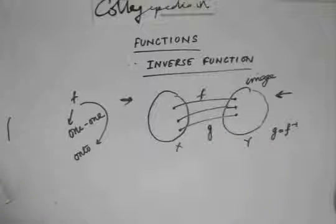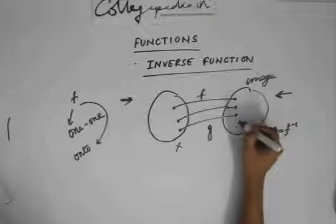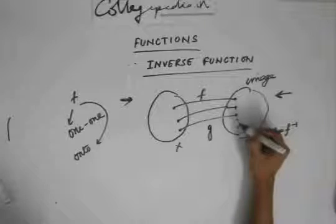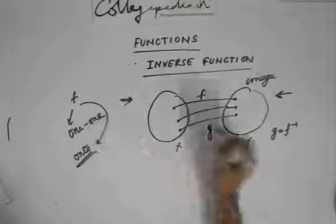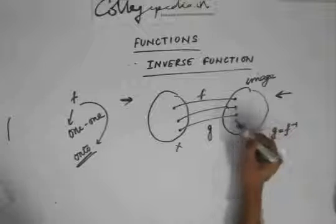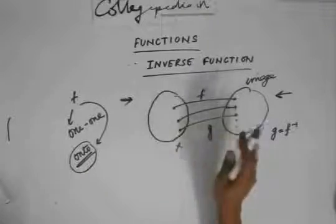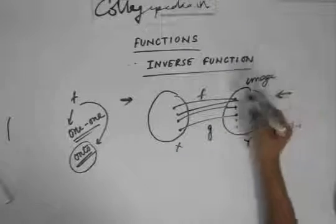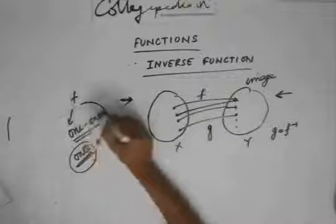For g to be a function, all elements in the set y must have an image. That means the function must be onto — unless it's onto, the range is not equal to the co-domain, and not every element would have a pre-image. It also has to be one-to-one, because if two elements in x map to the same element in y, then that element in y would have two images under g, and g couldn't be a function.